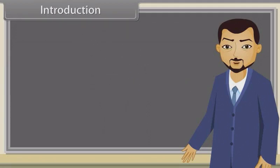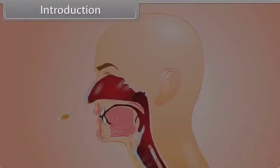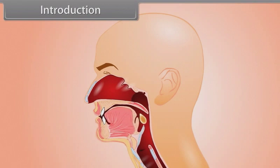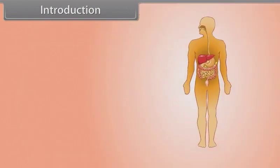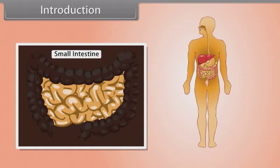Hey kids, we all know that we need energy to live and food is the primary source of energy. The process of digestion of food starts from the mouth and the action of absorption of energy majorly starts in the small intestine.